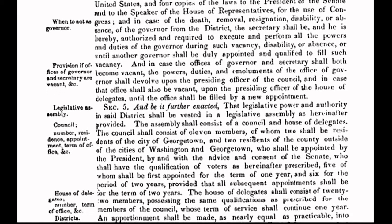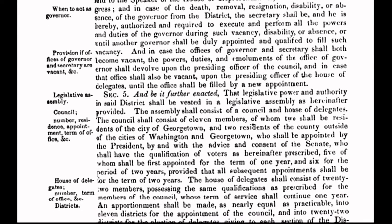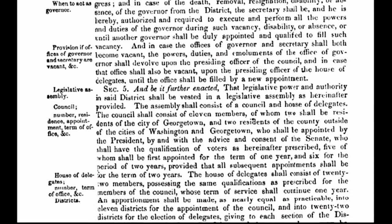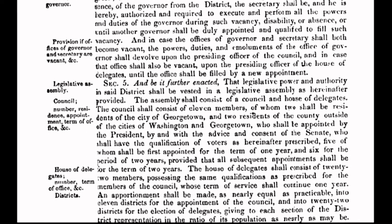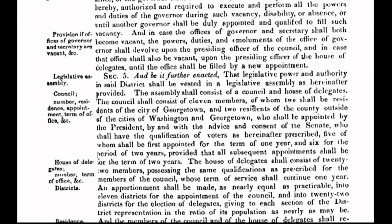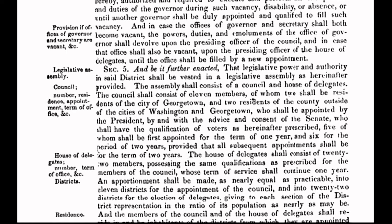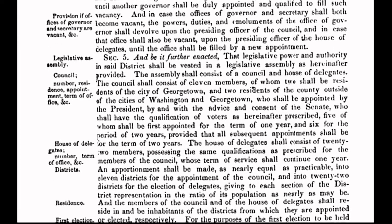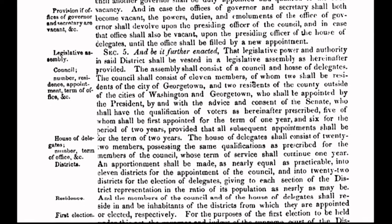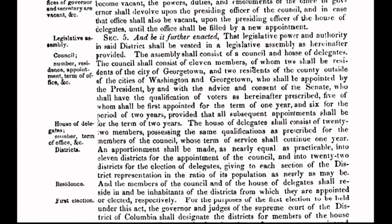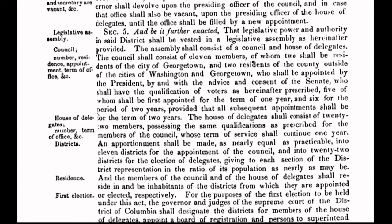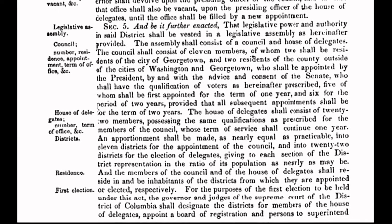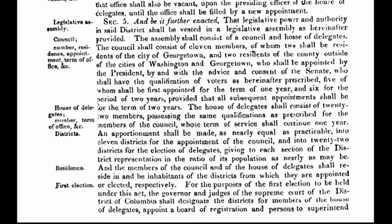It doesn't take a constitutional historian to figure out that the United States government has not been subject to the consent of the governed since long before you and I were born. Rather, the governed are subject to the whim and greed of the corporation, which has stretched its tentacles beyond the 10-mile-square parcel of land known as the District of Columbia — and has invaded every state of the republic. The corporation has no jurisdiction beyond the District of Columbia. You just think it does.